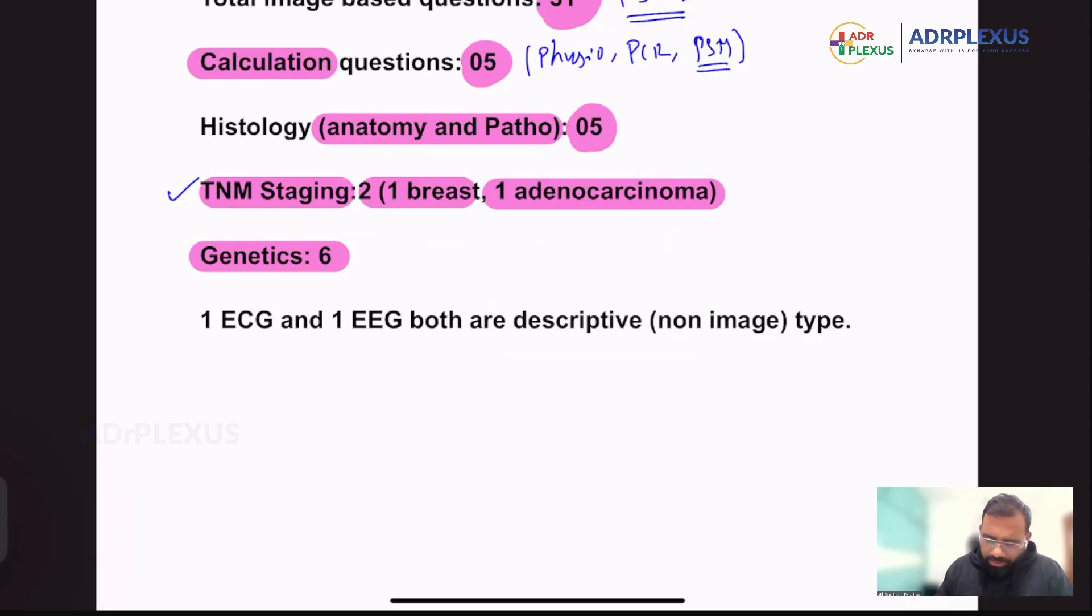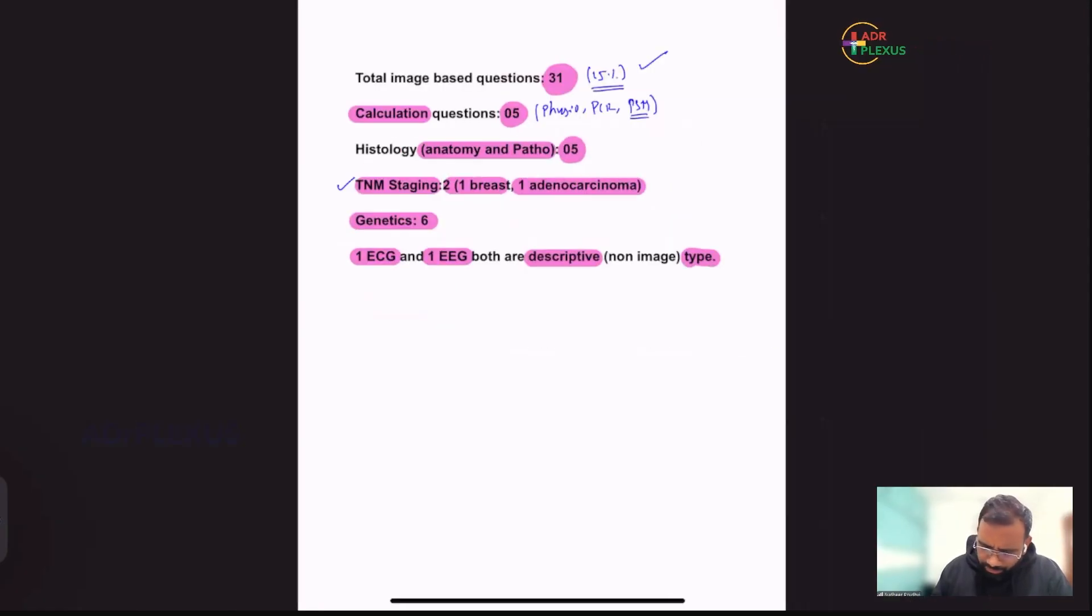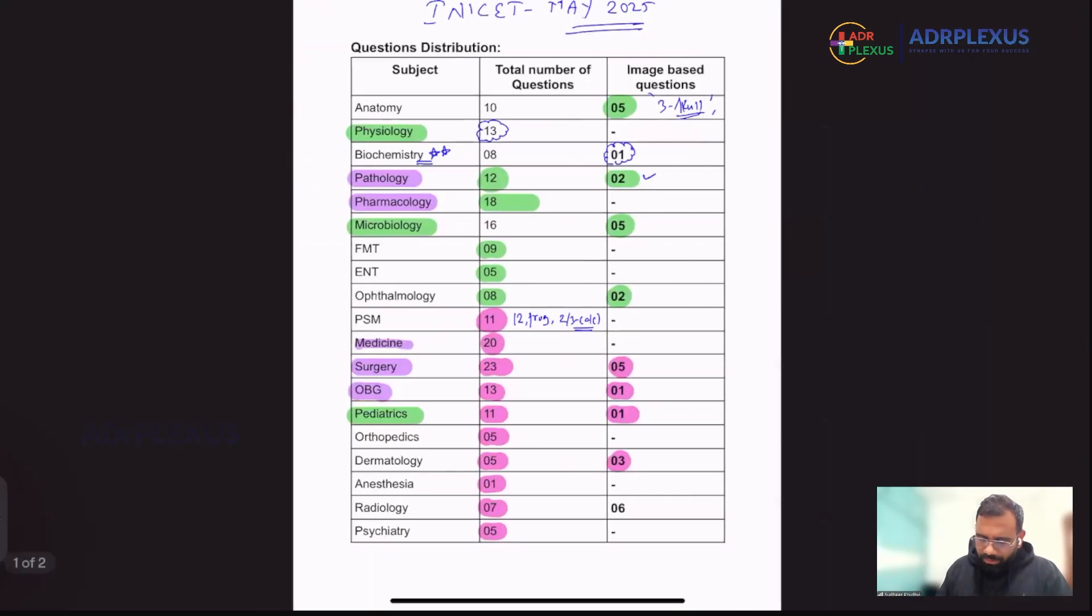And then every year he generally asks one question about ECG, but this year also he has asked, but it's not an image-based question. It's like a descriptive part. Descriptive part, one ECG and one EEG, both are not image-based, both are descriptive type they have given. So as per the information which we have, this is what analysis of INICT, May 2025.